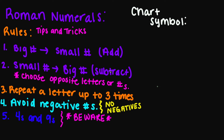Let's start with rule number one: if you are going from a big number to a small number, then you need to add. Rule number two: if you are going from a small number to a big number, then you need to subtract.